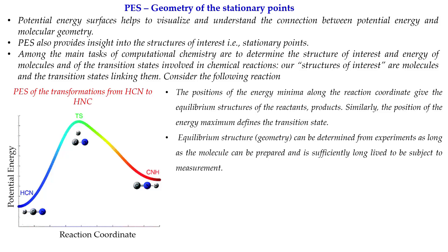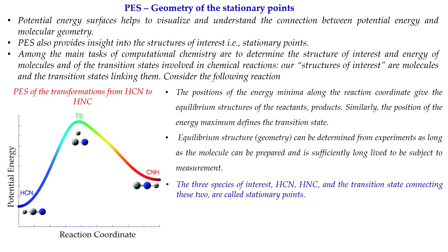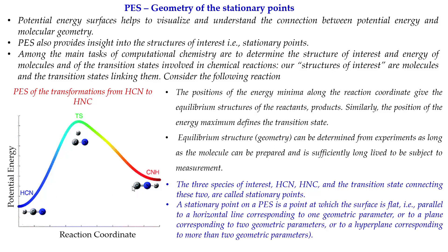Equilibrium structures can be determined experimentally because they are long-lived species — you can isolate them and determine their structure using spectroscopy and other tools. So here we only need three structures: HCN, HNC, and the transition state connecting these two stationary points. At the stationary points, the surface is flat and the slope is zero.